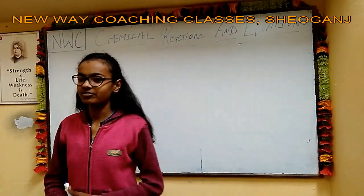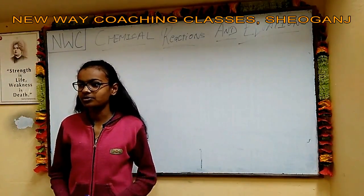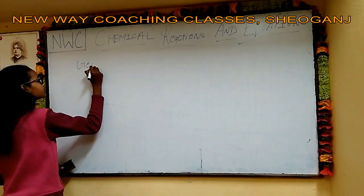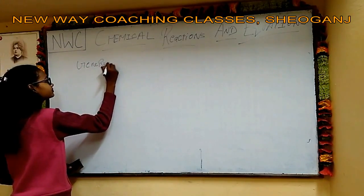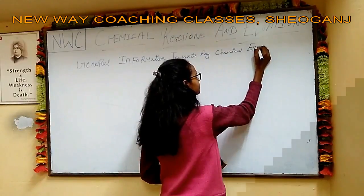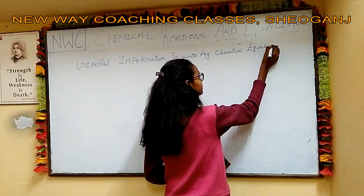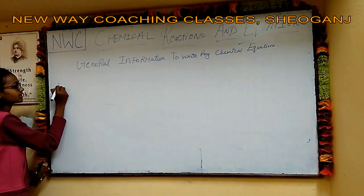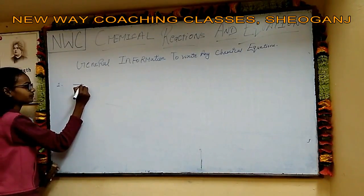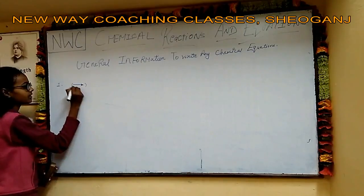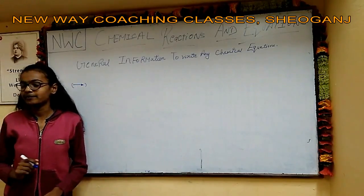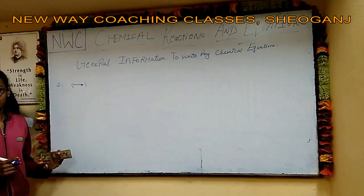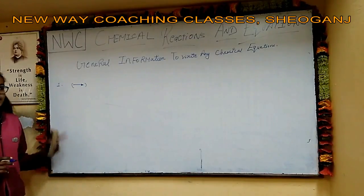For writing any chemical equation, we have to know some information about how to write a chemical equation. First, there is this arrow. As we all know, when we are writing any chemical equation, we put this arrow between the reactants and products.